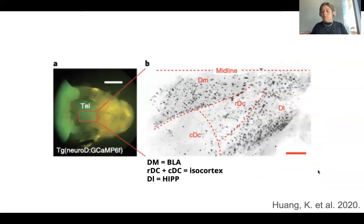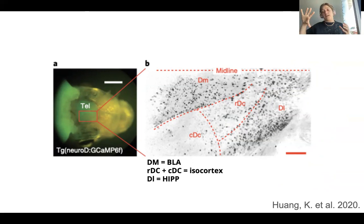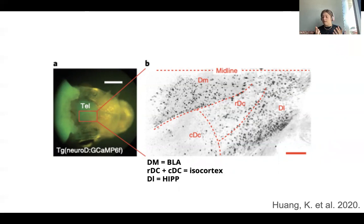Here we are looking at a wide-field fluorescent image of an adult zebrafish head. You can kind of see their brain through their skull and their skin — it's right here behind their eyes. Panel C is an image of just one and a half of the telencephalon. So you have the midline across. We have the DM, which is the medial zone of the dorsal telencephalon, homologous to our basolateral amygdala. We have the RDC and the CDC, which are both part of the central zone of the dorsal telencephalon. We have the dorsal lateral area and the dorsal portal area. Apparently these areas together are homologous to the isocortex or the neocortex — there's a lot of sensory perception, generation of motor commands, and spatial learning happening here.